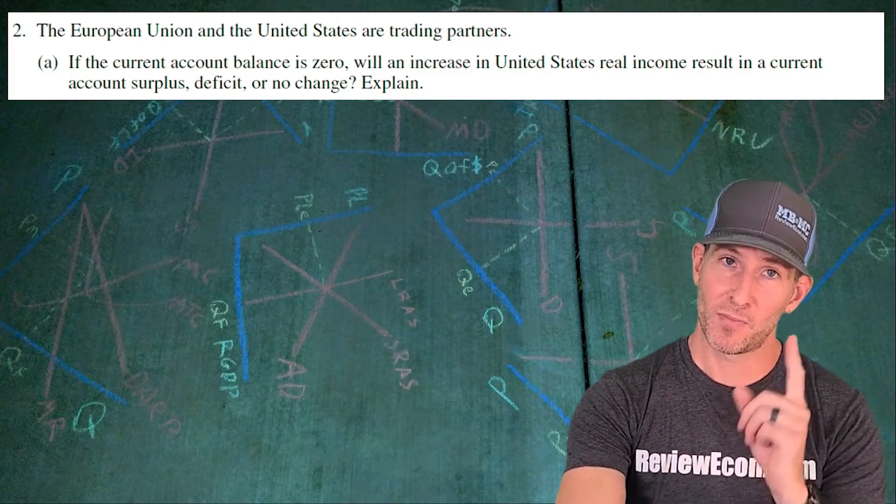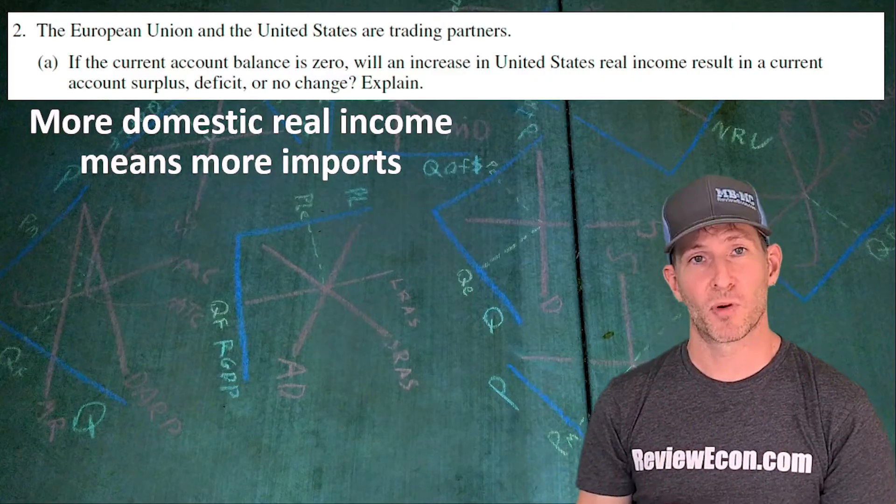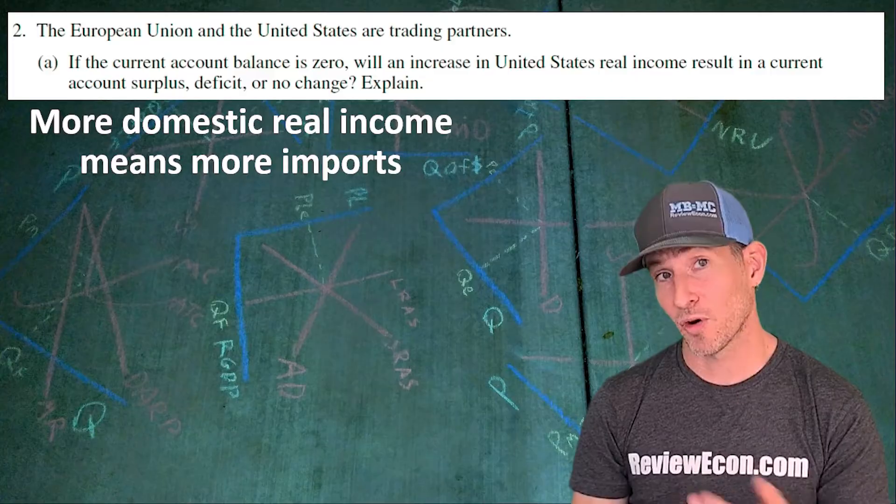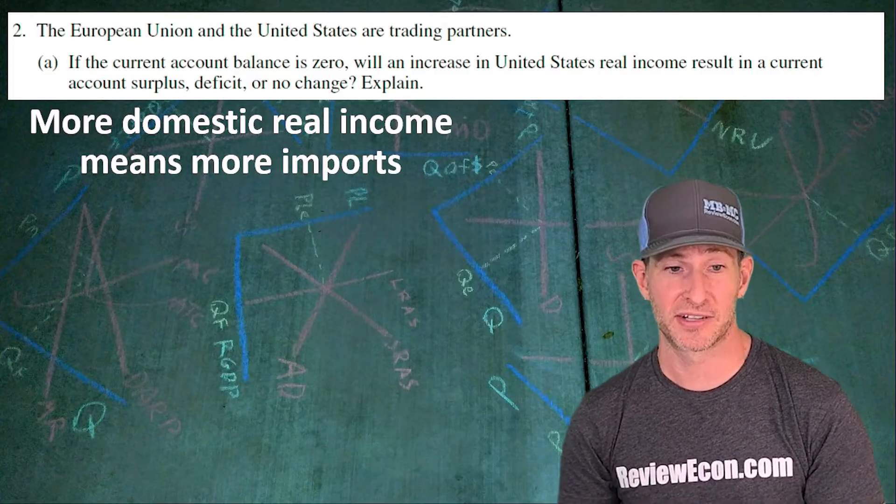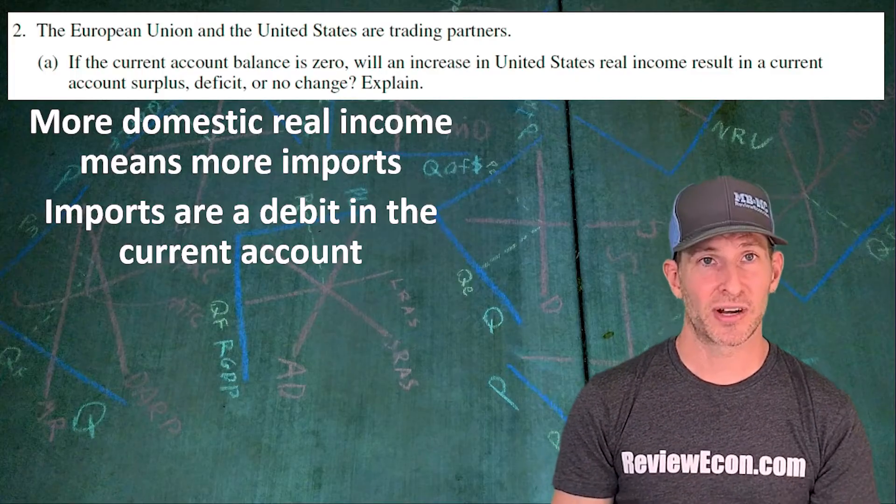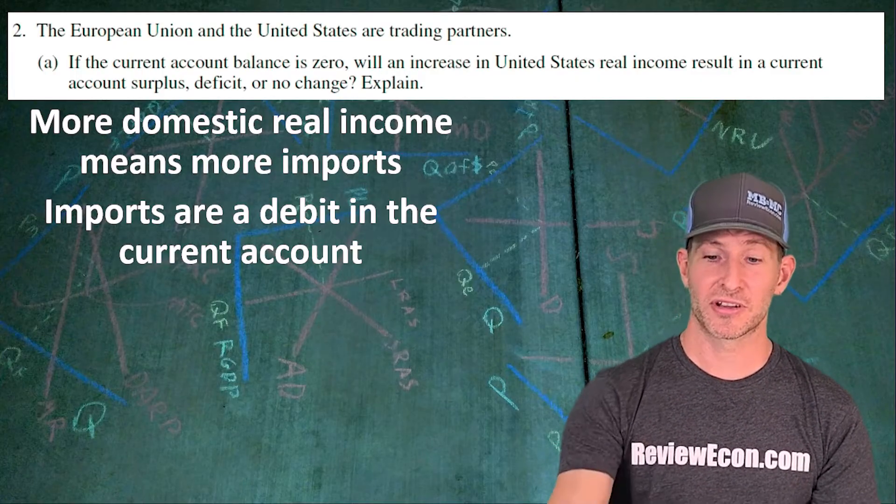Now the first thing we need to remember is that more real income means more imports. That's because more money and more wealth means more purchases of everything including things made in other countries. That increase in imports is a debit in the current account. So what will that do to the current account?